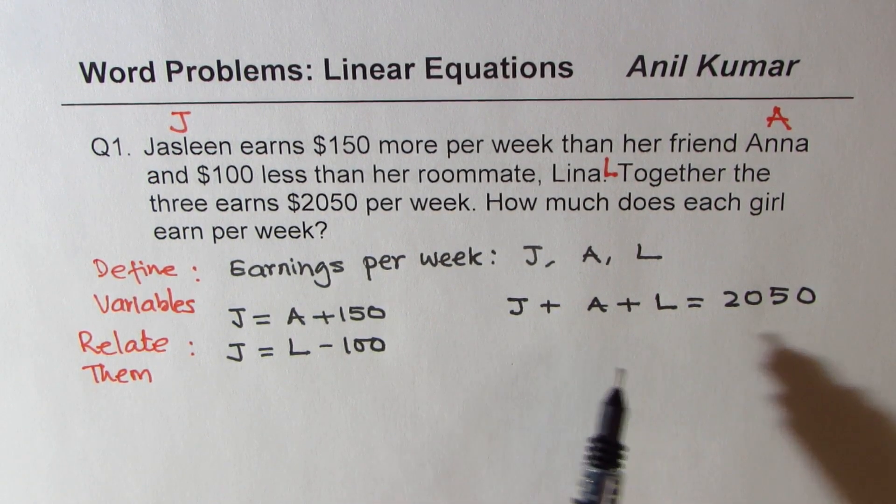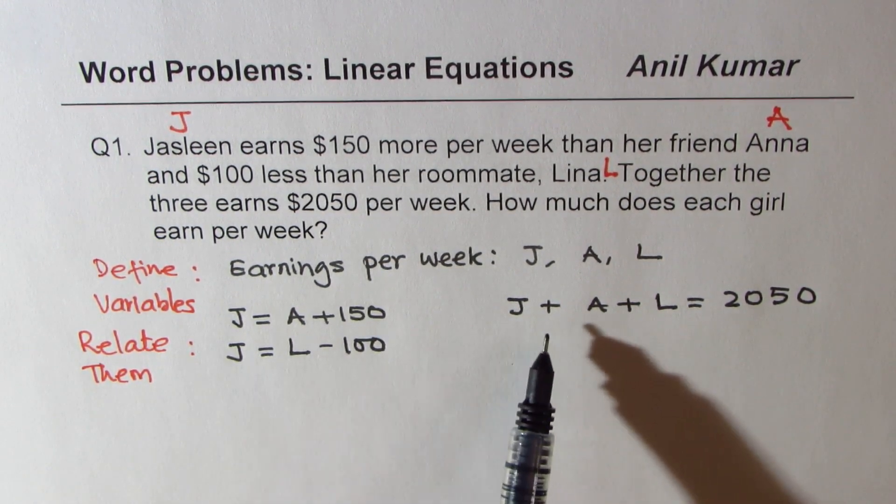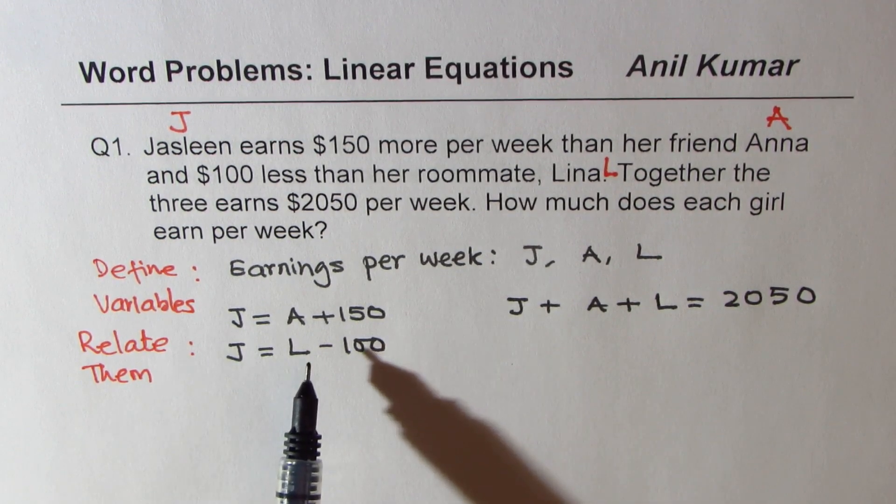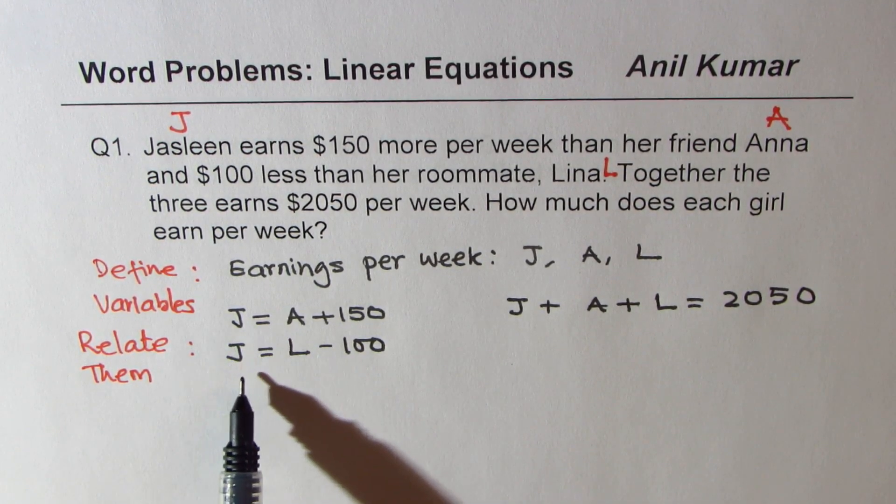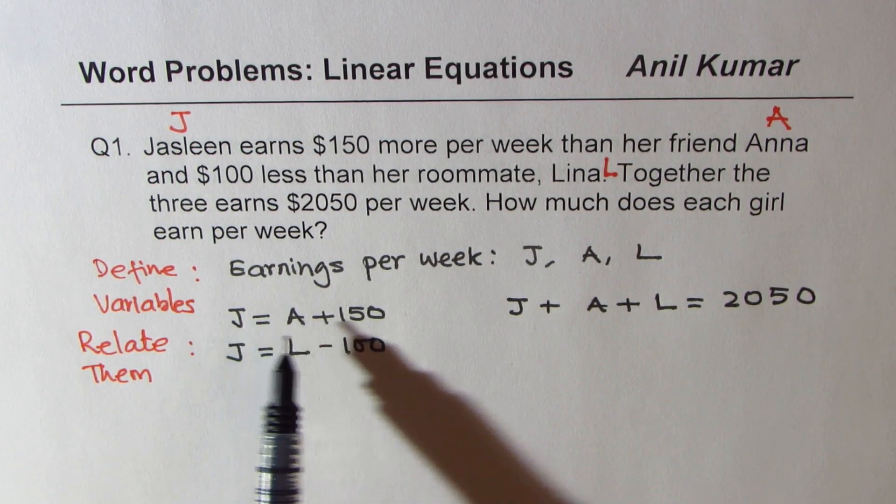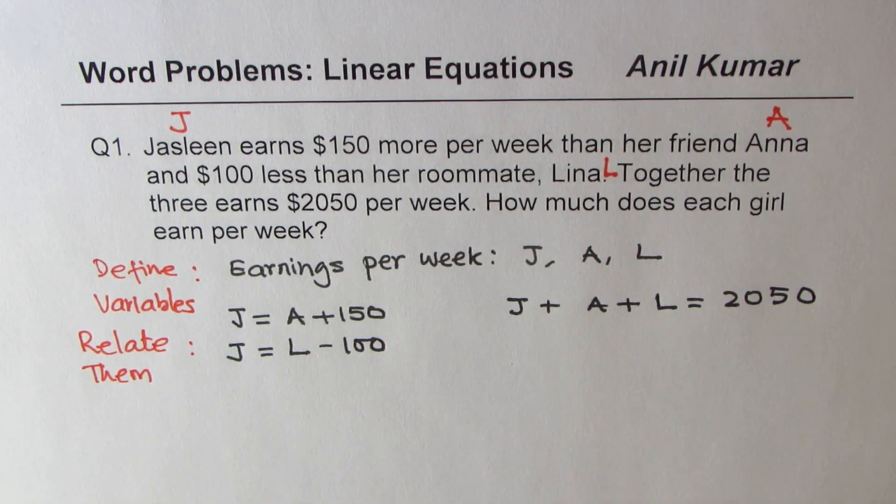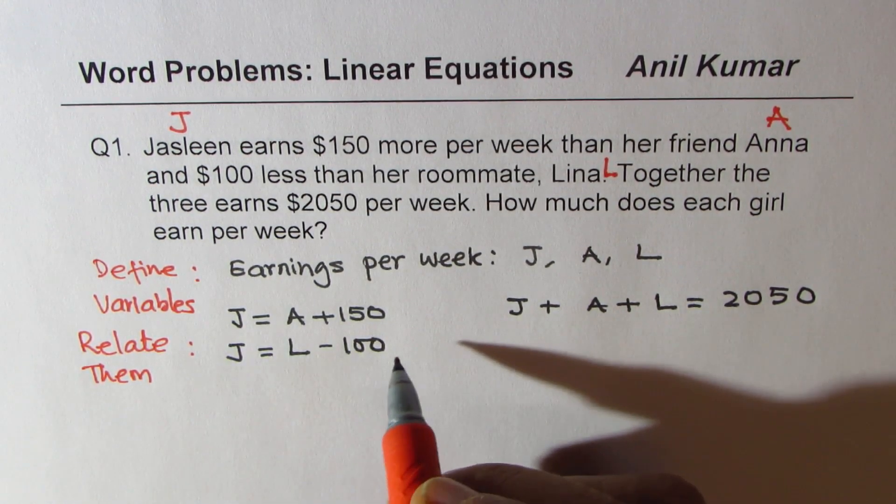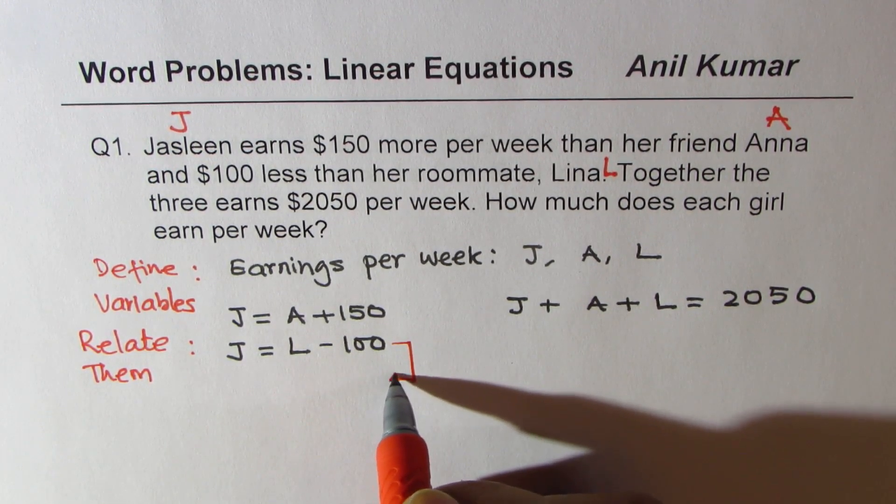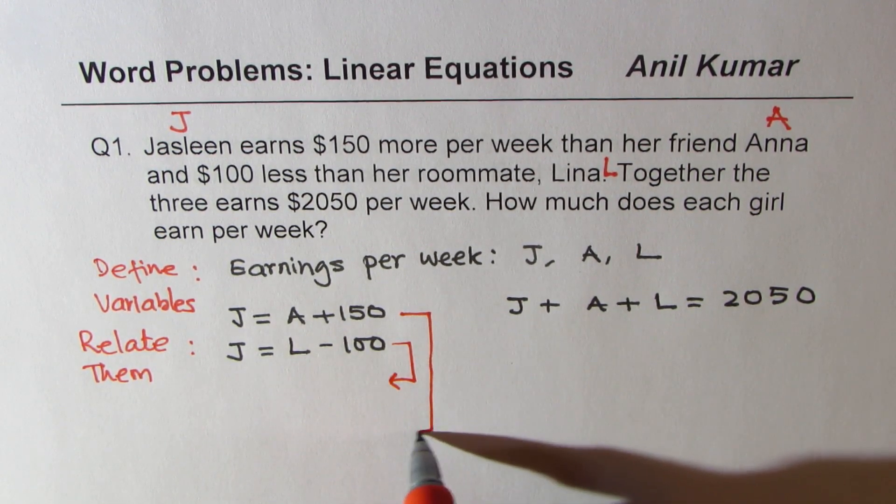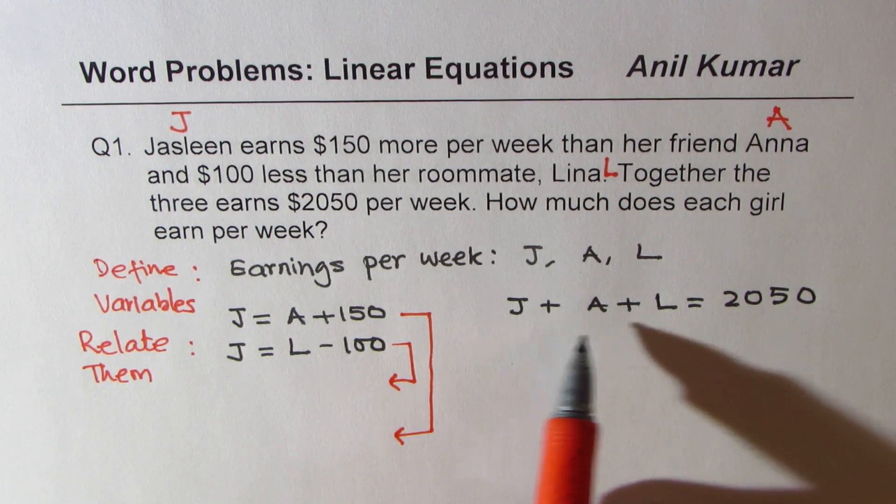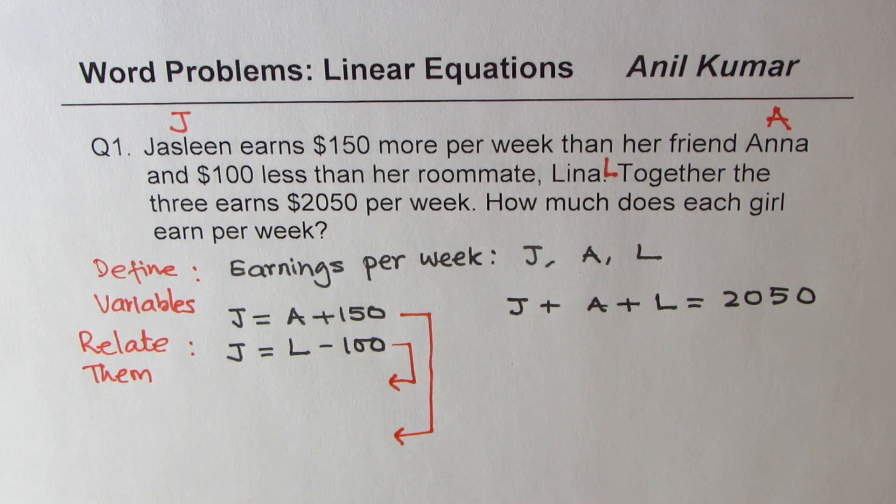Now the idea is to write all in terms of one. So we'll choose J as the one since we are relating everybody to J, Jasleen's earnings. So let's rewrite these equations and then we are going to substitute.